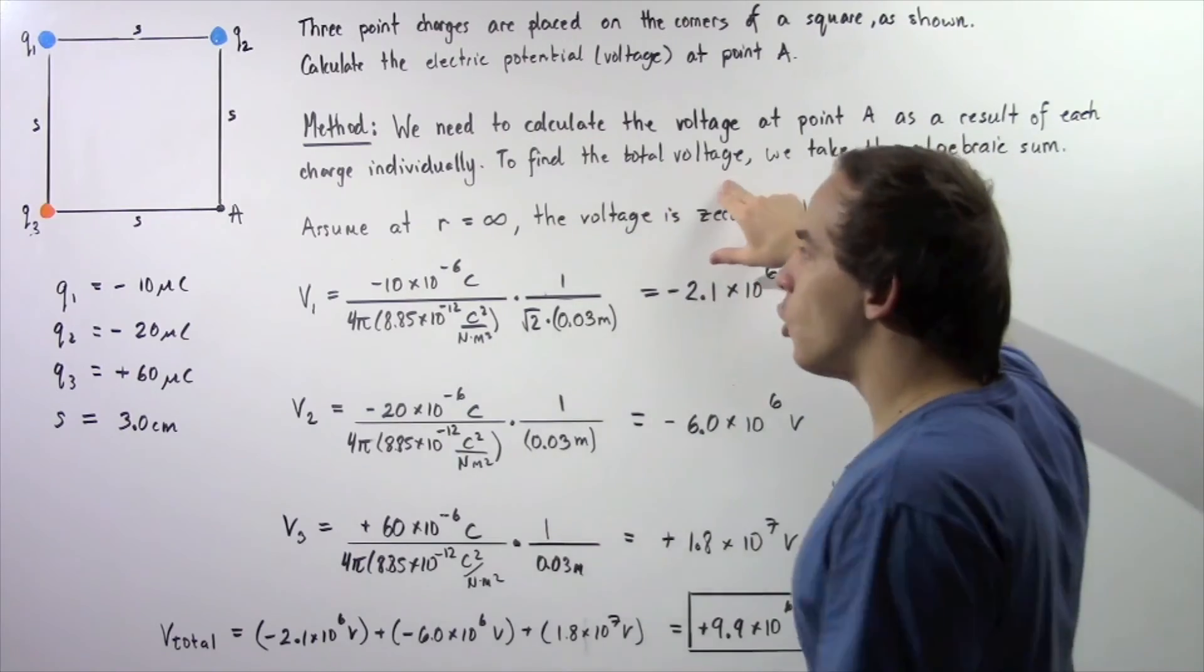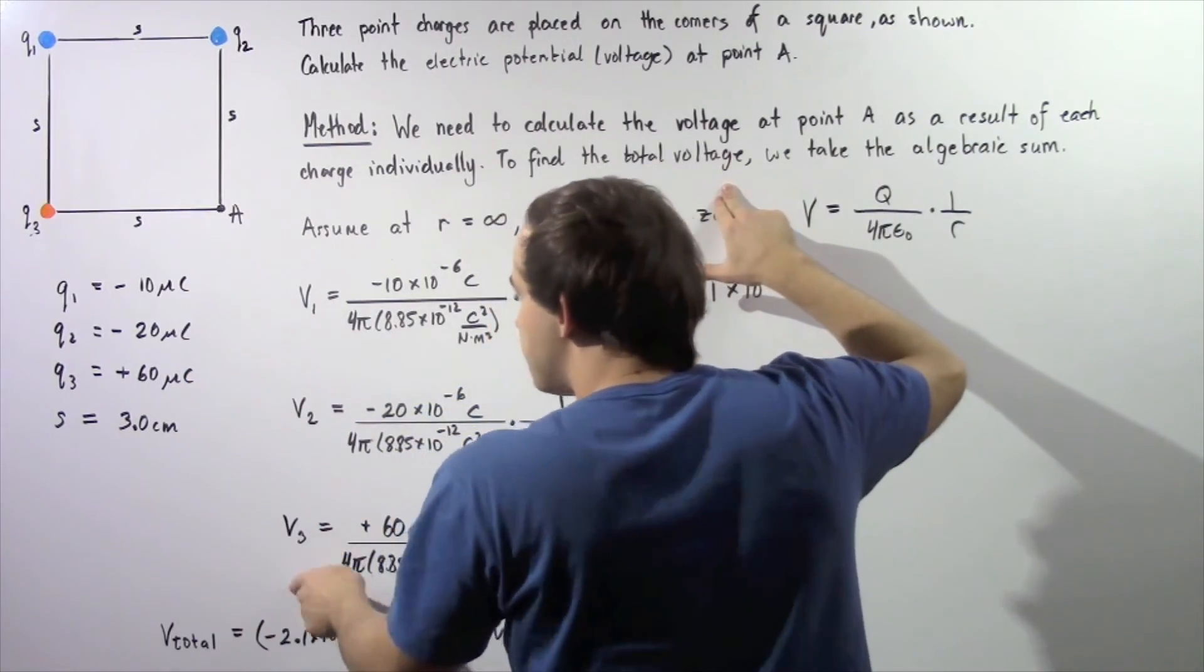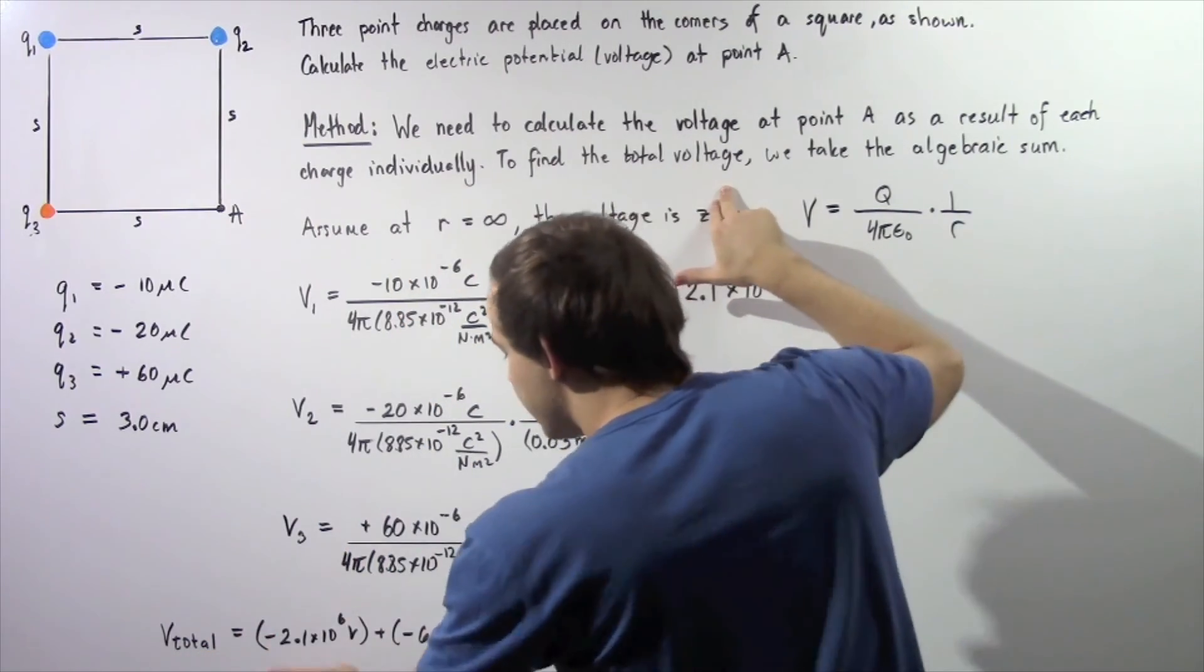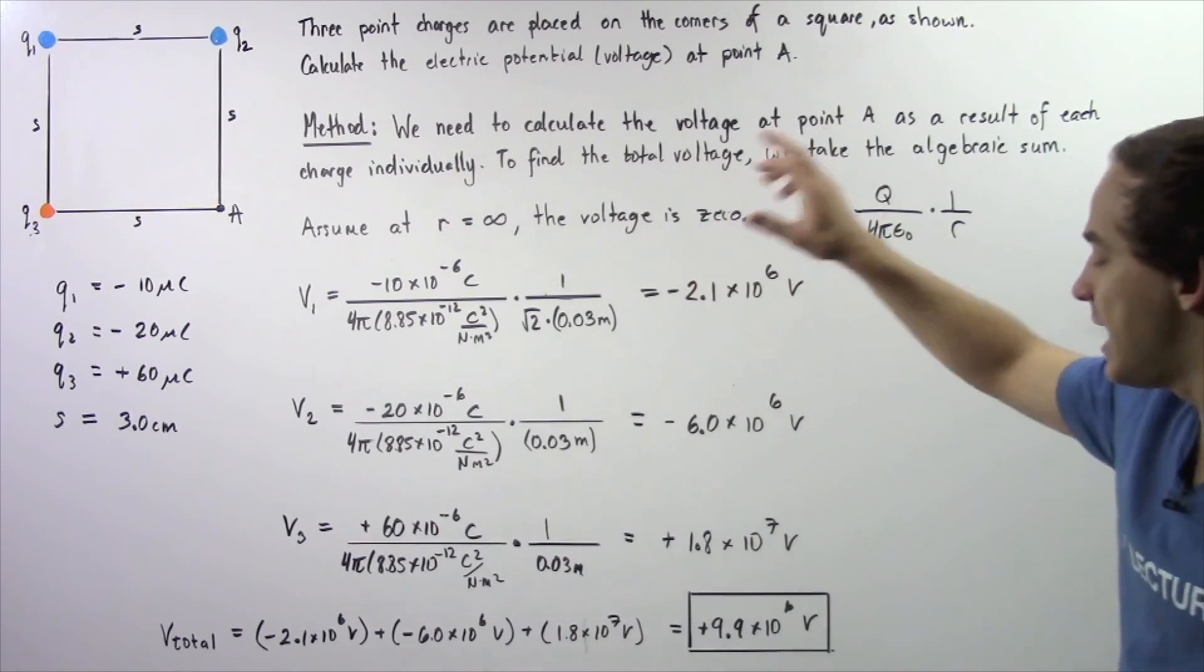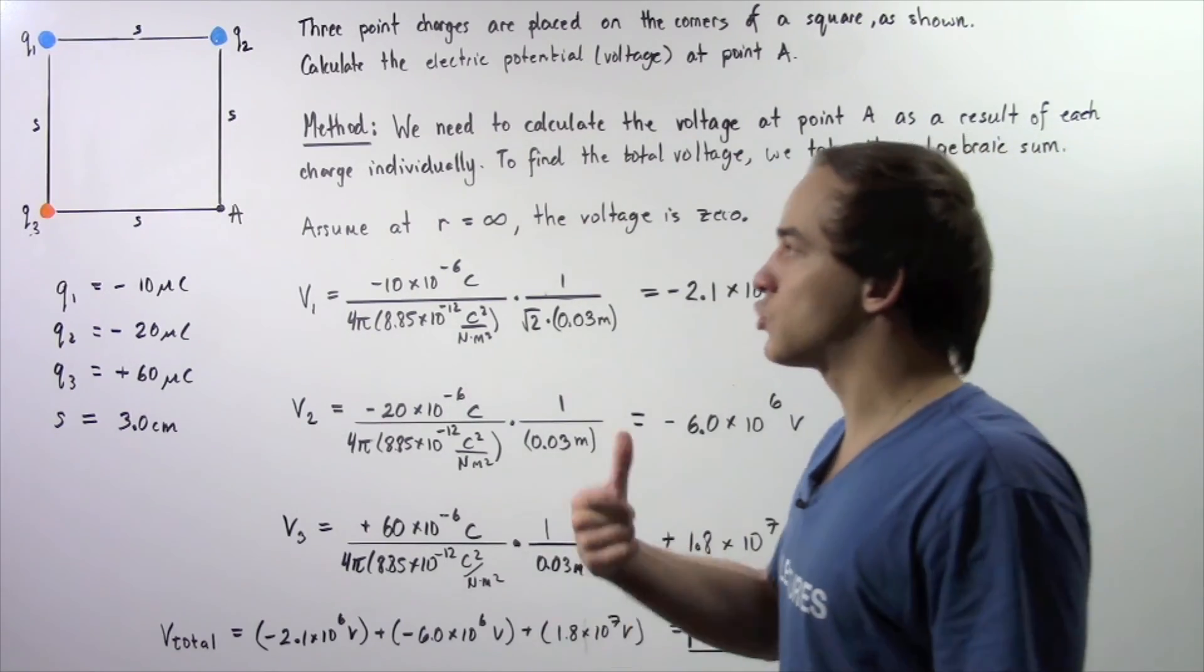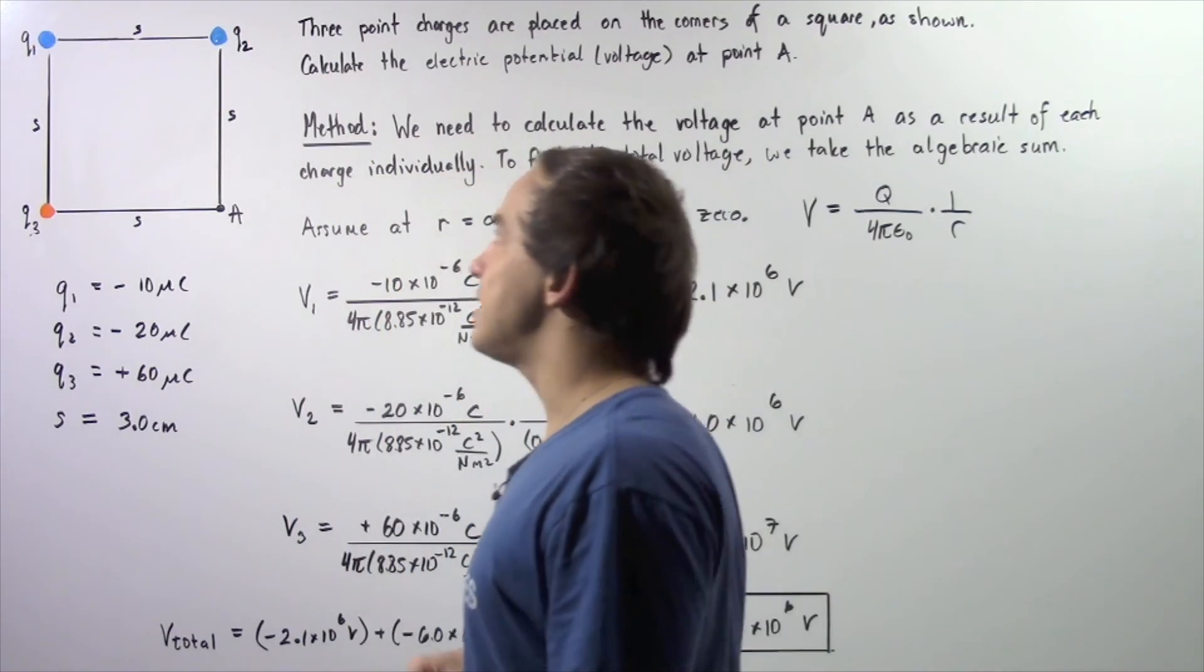To calculate the total voltage at point A, we simply take the algebraic sum of these three voltages. V total is equal to V1 plus V2 plus V3, and that gives us about positive 9.9 times 10 to the 6 volts. This is the voltage, the electric potential at point A as a result of these three stationary point charges.